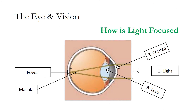In ideal circumstances, the image or light travels through the cornea, is focused by the lens onto the fovea, macula, and retina as shown in this picture.